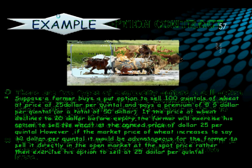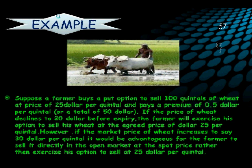Let us take an example. Suppose a farmer buys a put option to sell 100 quintals of wheat at a price of 25 dollars per quintal and pays a premium of 0.5 dollars per quintal, or a total of 50 dollars. If the price of wheat declines from 25 to 20 dollars before the expiry, the farmer will exercise his option to sell his wheat at the agreed price of 25 dollars per quintal, because he has the right under the put option.